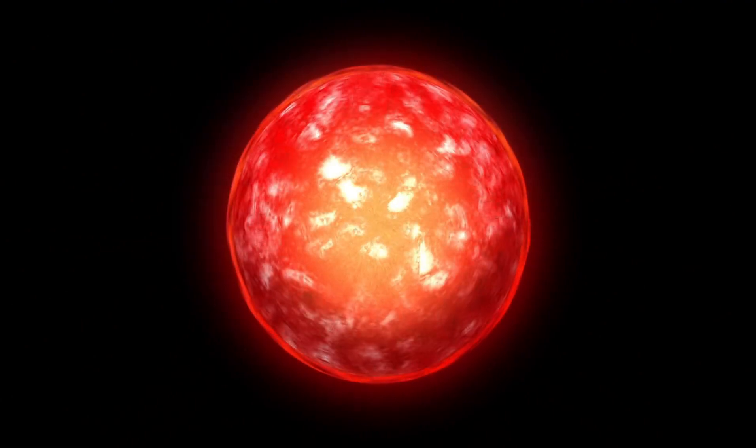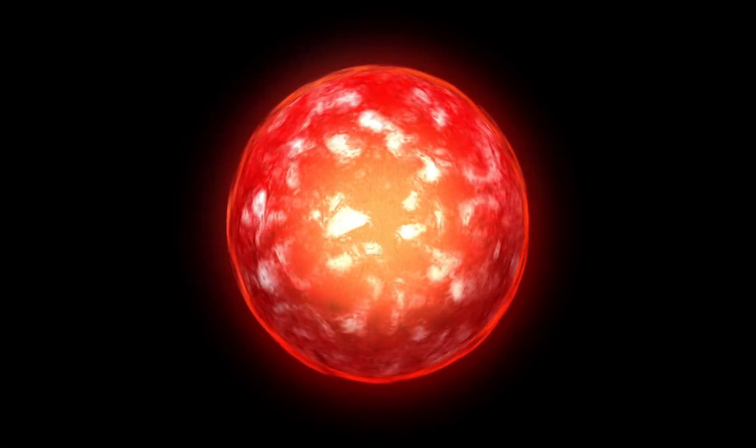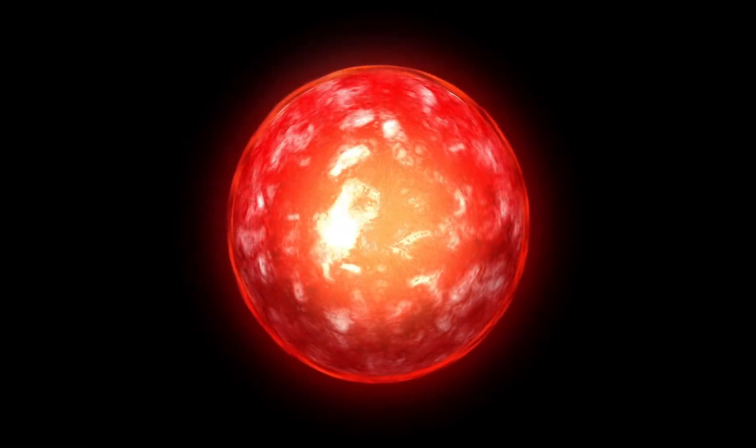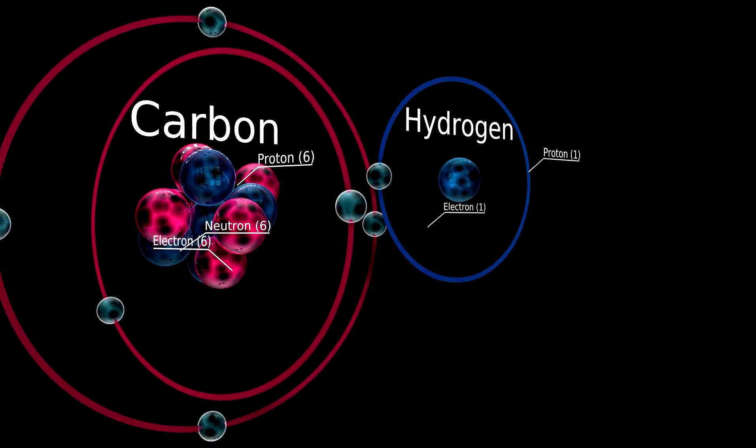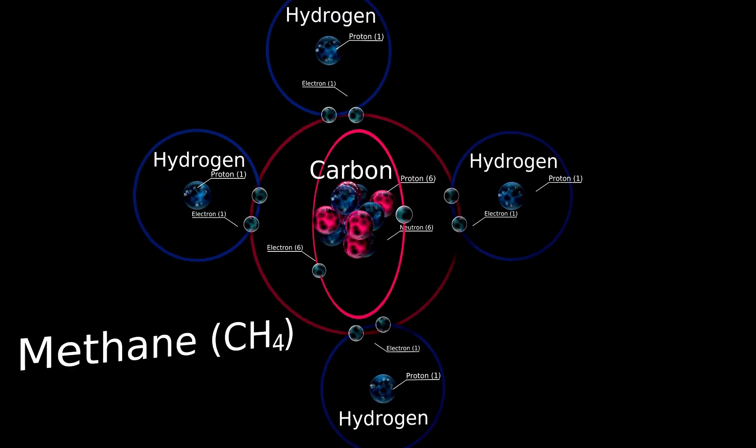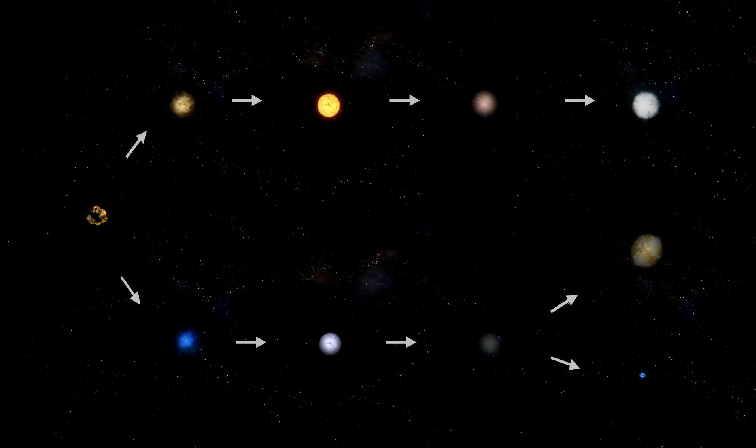However, its size is not the only thing that makes it noteworthy. Betelgeuse is at the very end of its life cycle, in a phase known as the supergiant phase, where it is expanding and cooling after billions of years spent fusing hydrogen into helium in its core.